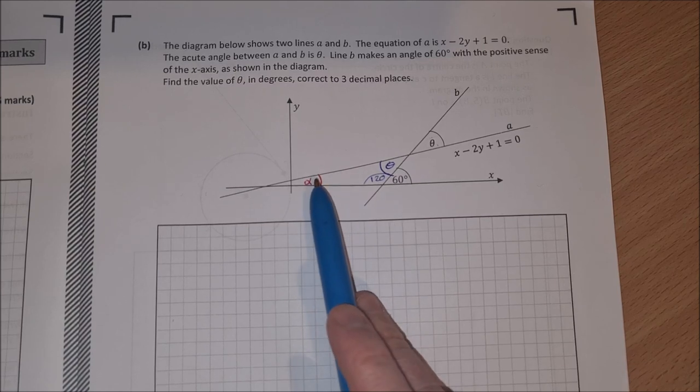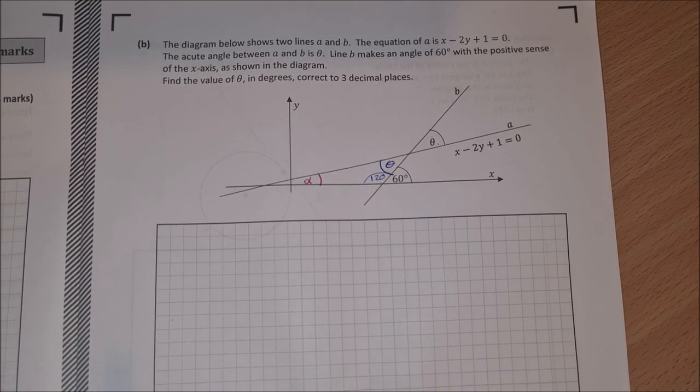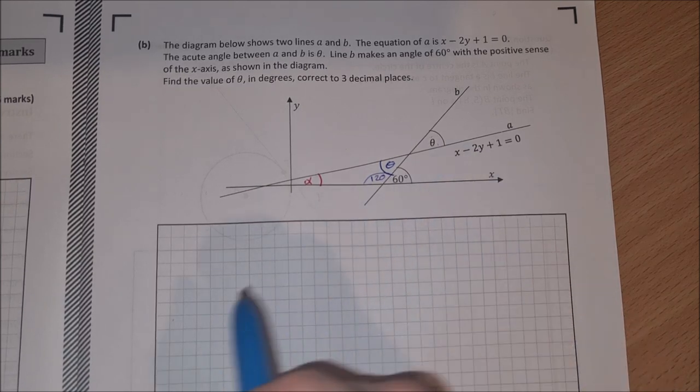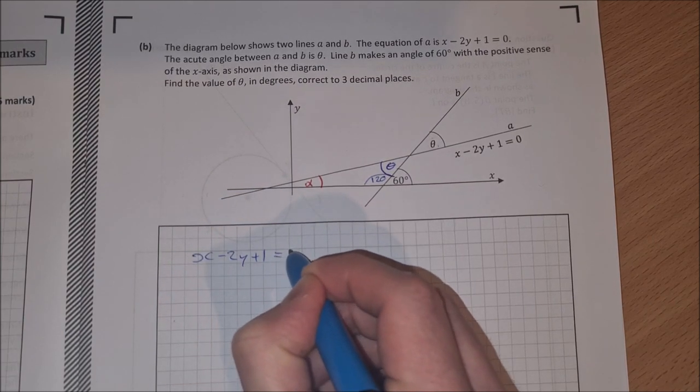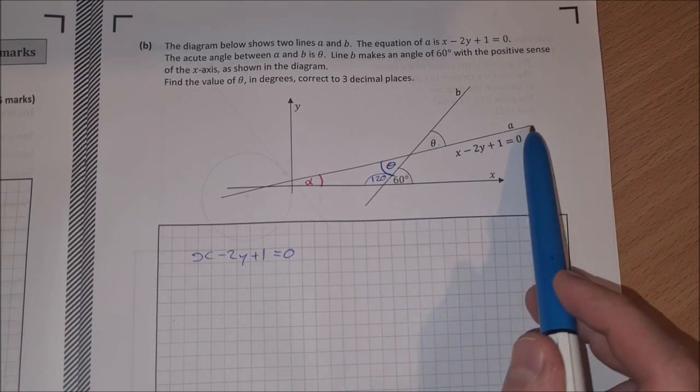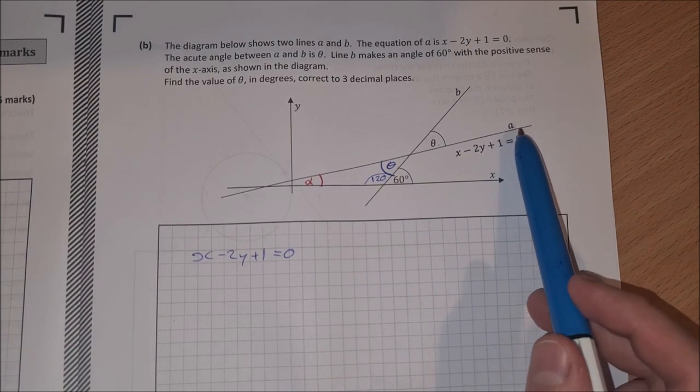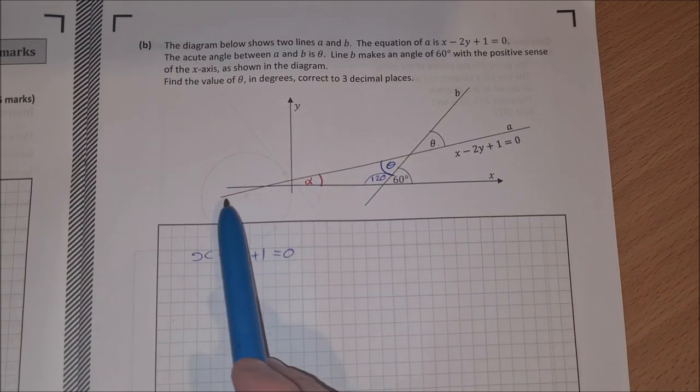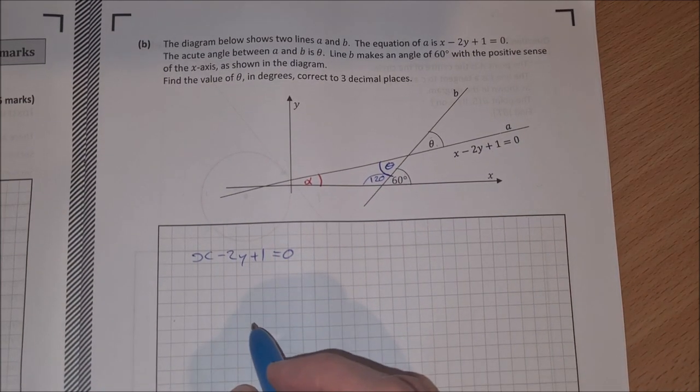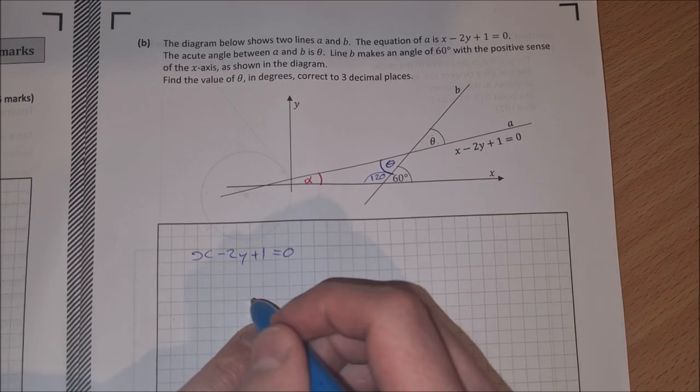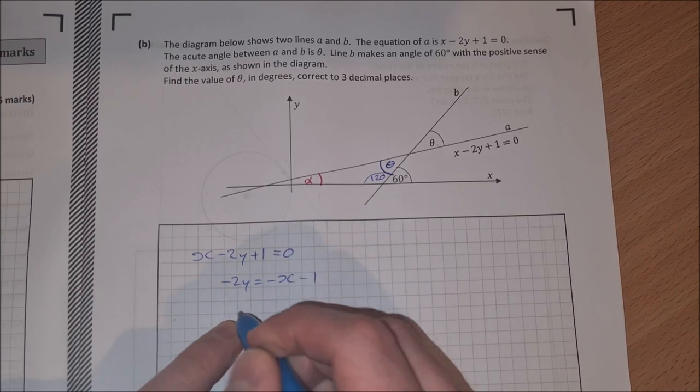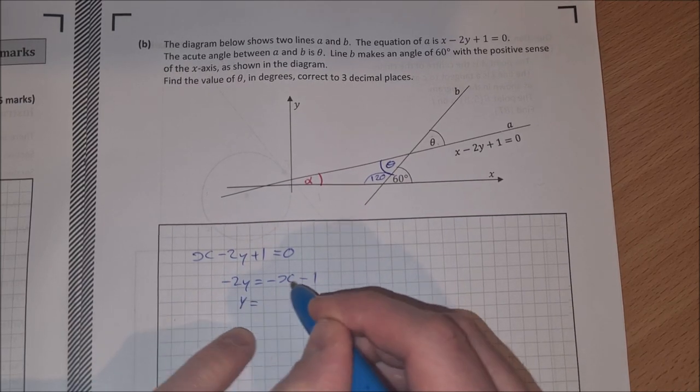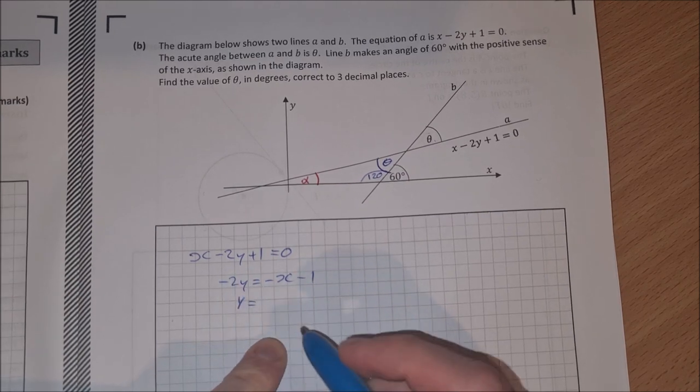If we can find this angle alpha, then I can just do 180 minus alpha minus 120, and that'll give me theta. So how can I find alpha? Well, my equation here of x minus 2y plus 1 equal to 0. Now there's two ways you can do this. You can use the equation for the angle between two lines and use this line and the x-axis, or you can possibly do it a simpler way. If I write this as y equal to mx plus c, so -2y equals -x minus 1.